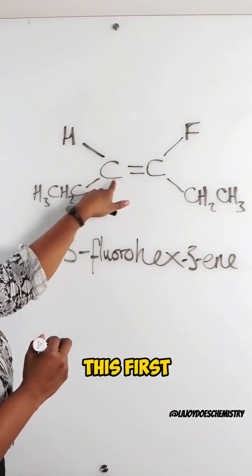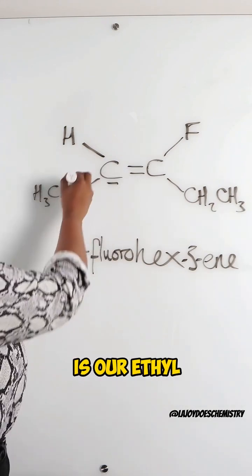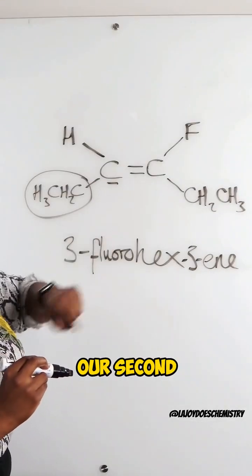If we look at this first carbon in our carbon-carbon double bond, our higher priority group is our ethyl group over here. If we look at our second carbon, the higher priority group, which is the group with the largest atomic number, is the fluorine.